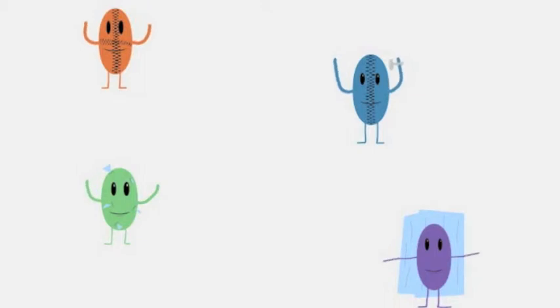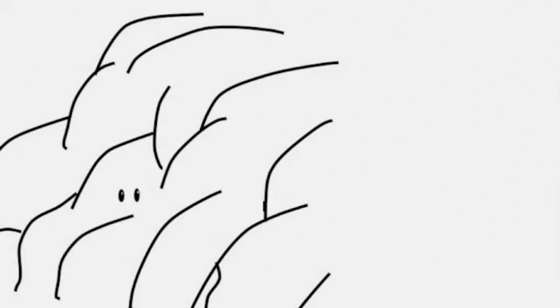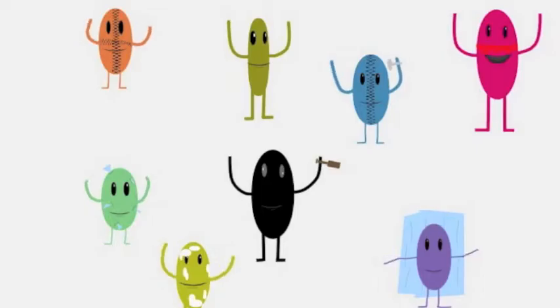So many dumb ways to die. Get decapitated by your vest, get hit by an avalanche. Don't drink and drive, it's sad. Crash your snowmobile into a shed. Dumb ways to die.